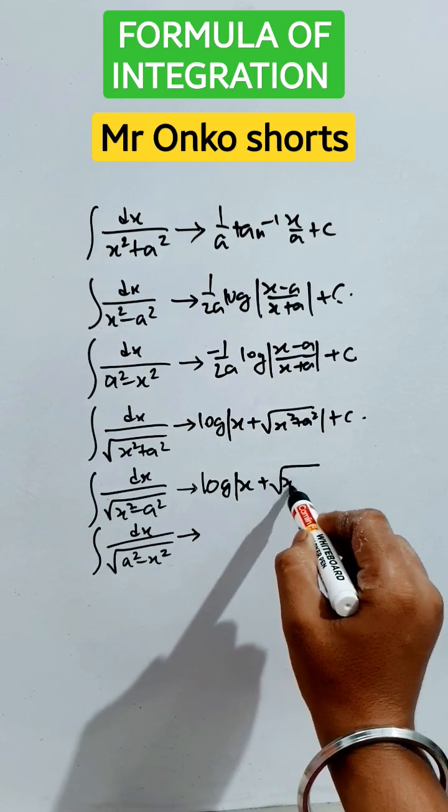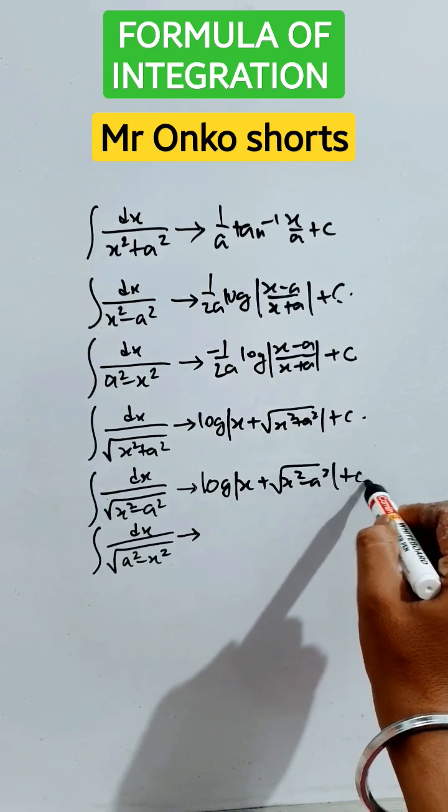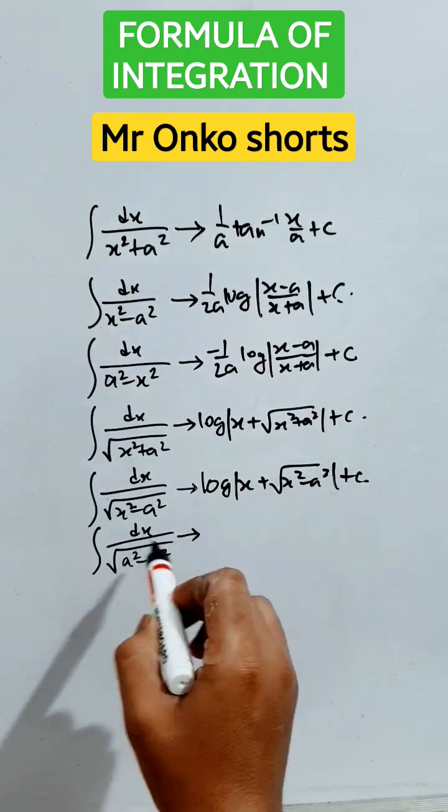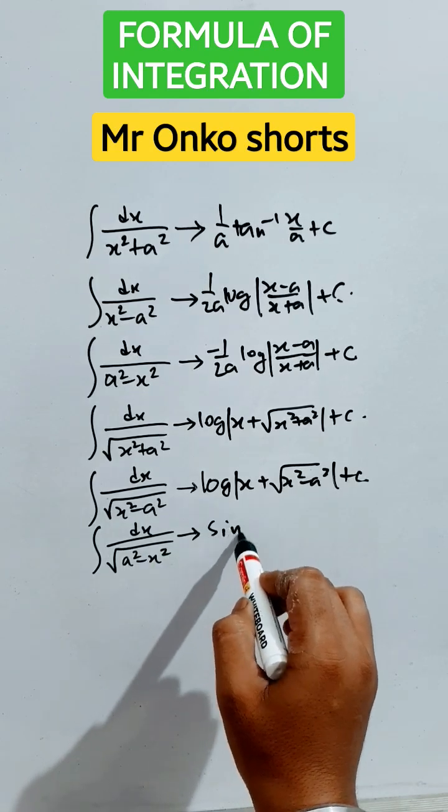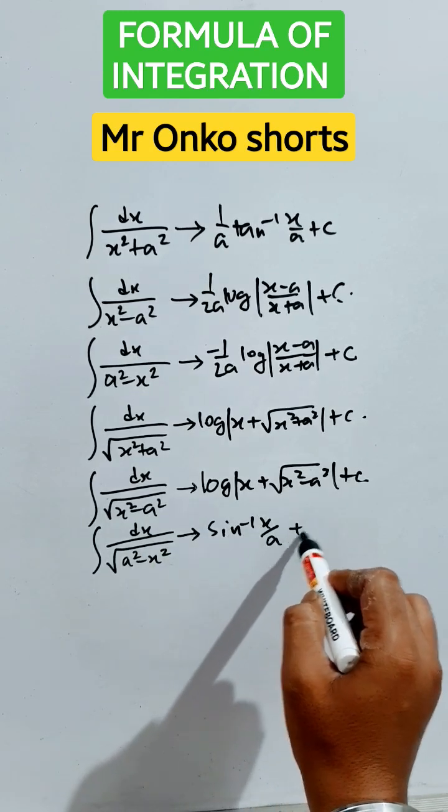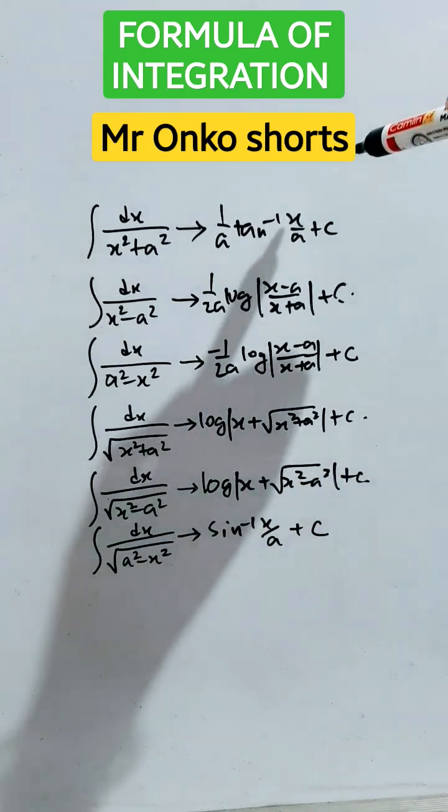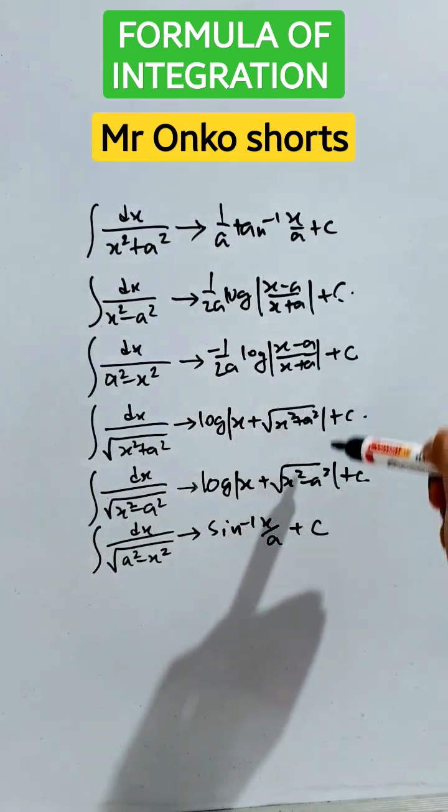And the last one, that is √(a²-x²), it will be sin⁻¹(x/a) + c. Thus you can understand and remember the tricks to find.